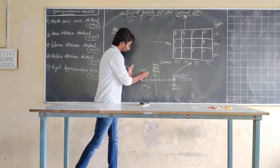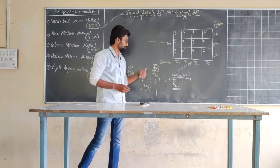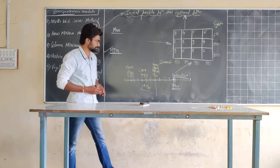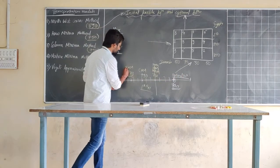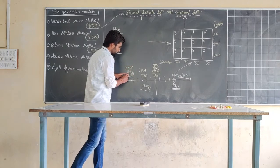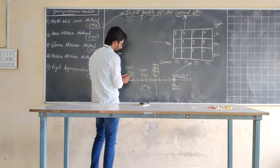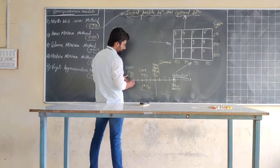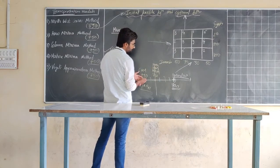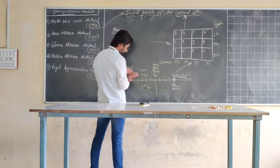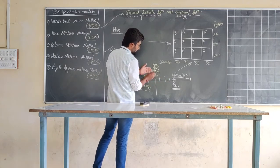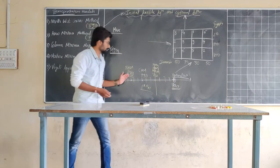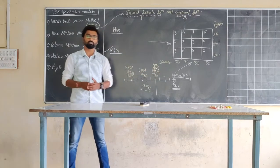After going through this first part, we have to perform certain iterations which will lead us to reach the optimal solution. If we used northwest corner method in the first part, we will have to go through three or four iterations to reach the optimal solution. But if we used column minima for this transportation model, we may reach it in fewer iterations. And if we used methods like Vogel's approximation, we may reach the optimal solution in just one or two iterations.